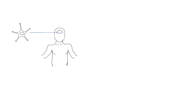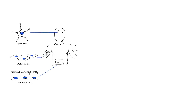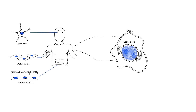Every cell in the human body contains the same DNA. Our genome consists of 3 billion base pairs and is a recipe for all molecules that make up the cells, tissues and organs in our body. But what makes these cells different?